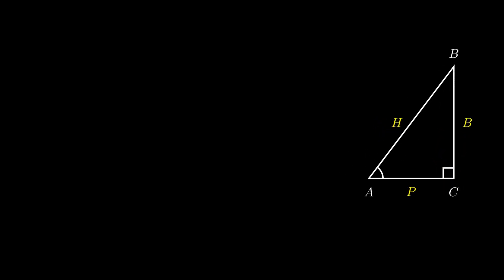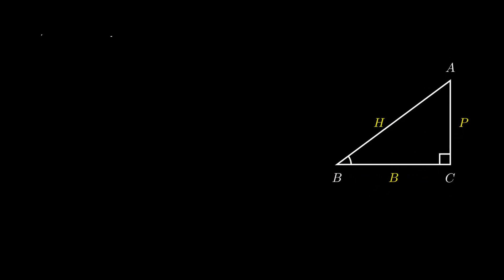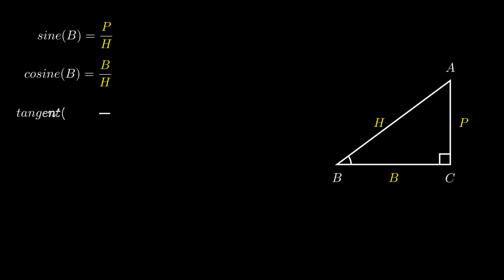The first trigonometric ratio is sin B, defined as the ratio of perpendicular to hypotenuse. The second is cosine B, defined as the ratio of base to hypotenuse. The third is tangent B, defined as the ratio of perpendicular to base. On careful observation, the ratio of sin B to cosine B gives us the ratio of perpendicular to base, which is equal to tangent B.